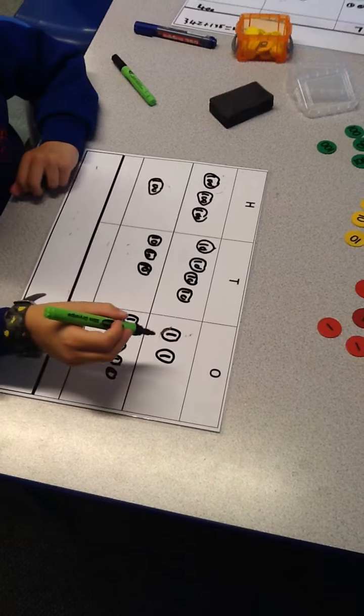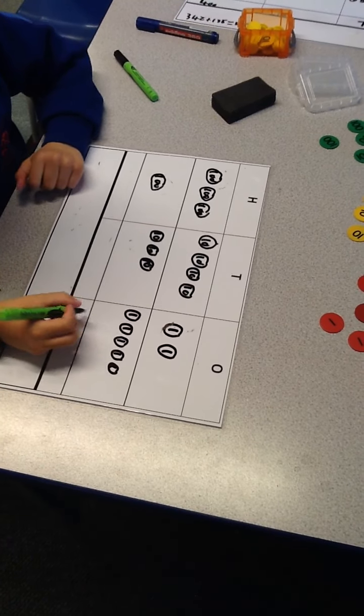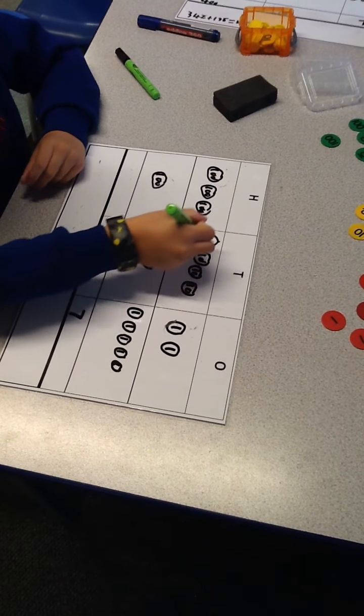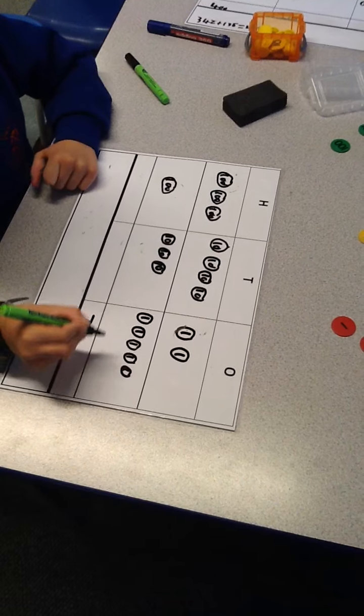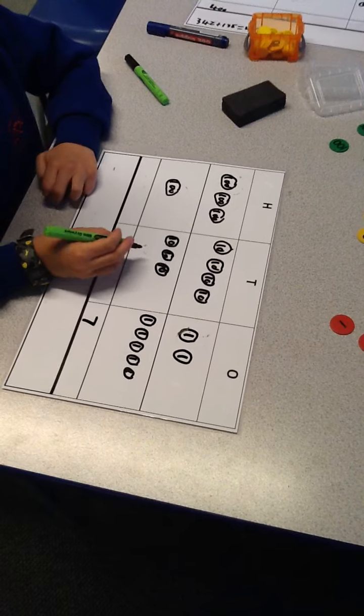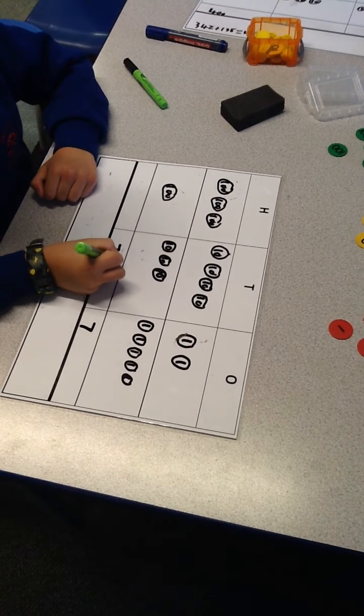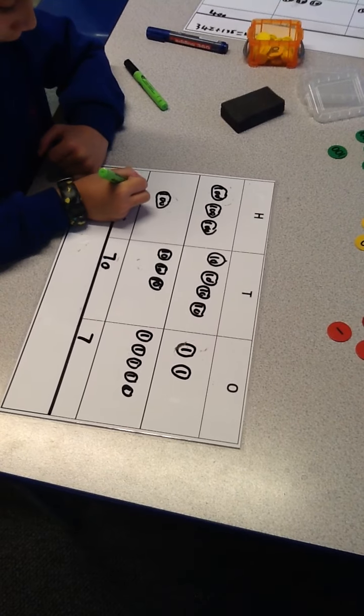Now I need to do my calculation. There are 7 ones that make 7, there are 7 tens that make 70, and there are 4 hundreds that make 400.